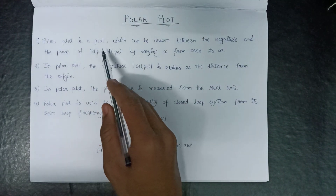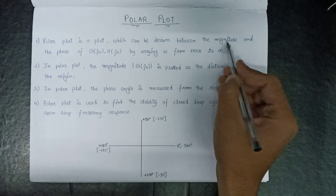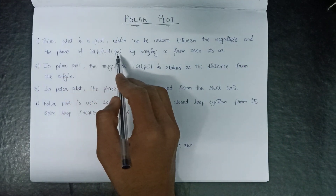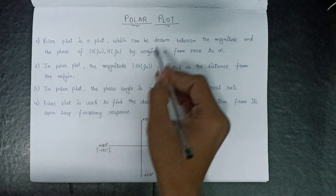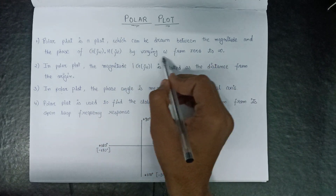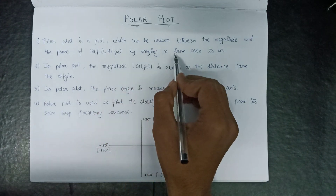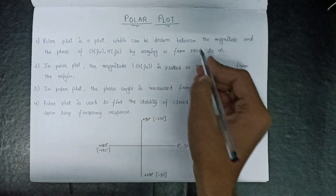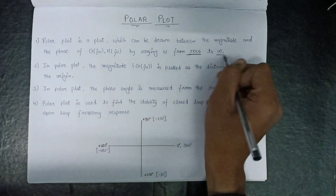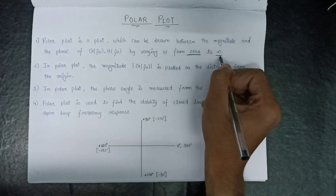A polar plot is basically a plot drawn between the magnitude and the phase of G(jω) and H(jω), where the value of ω on which G(jω) and H(jω) depends varies from 0 to infinite, so the value of ω starts from 0 and always ends at infinite.